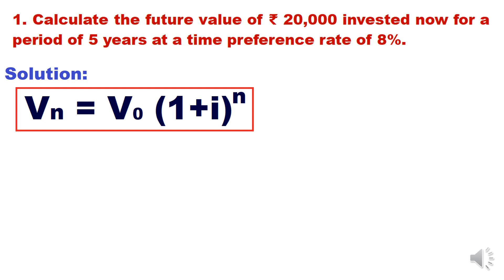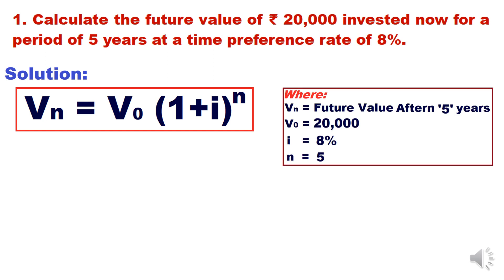Some people use the symbol P for principal value instead of V0 — the content of the formula remains the same regardless of the symbols used. For this question: Vn is the future value after five years (to calculate), V0 = ₹20,000, i = 8%, and n = 5 years.